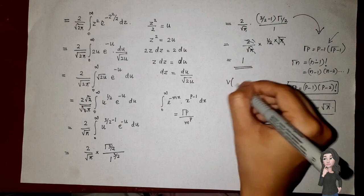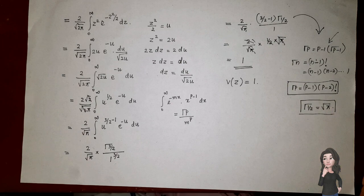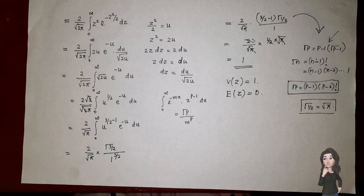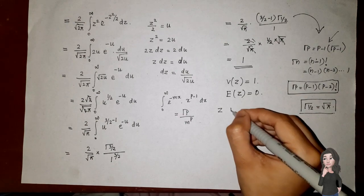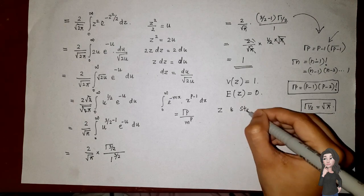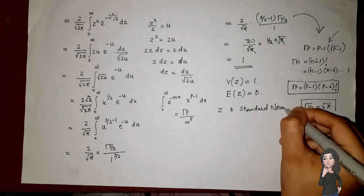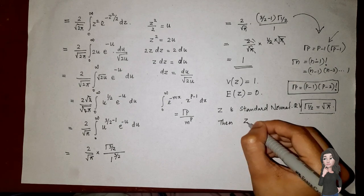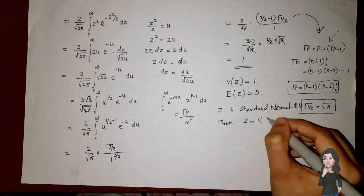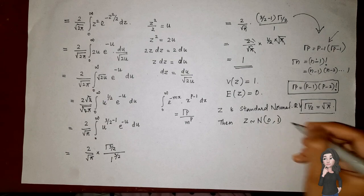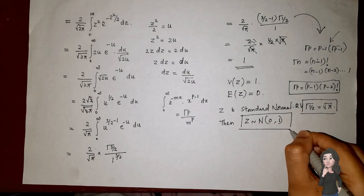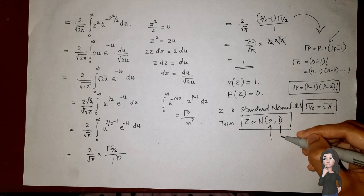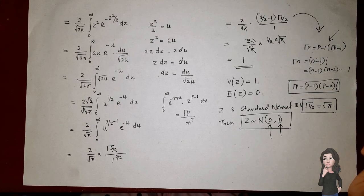Therefore the variance of Z is equal to 1. Also, the mean of Z is equal to 0. So we can say that if Z is a standard normal random variable, then Z follows N(0, 1). This is the standard notation for a standard normal random variable — it has mean 0 and variance 1, and therefore standard deviation 1.